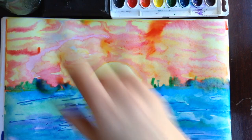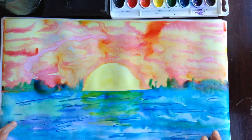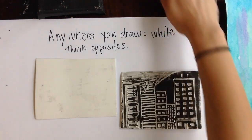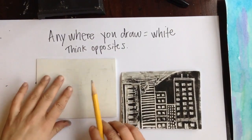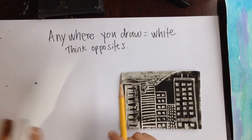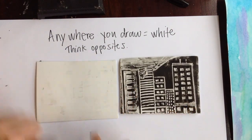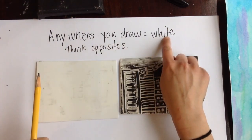All right. And then wait until it dries for the next step. For day two of the city prints, you are going to use a piece of styrofoam and draw into it to create your city. Just keep in mind that anywhere you draw is going to be white.